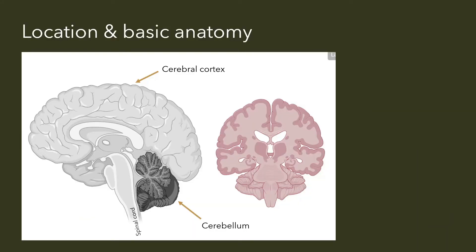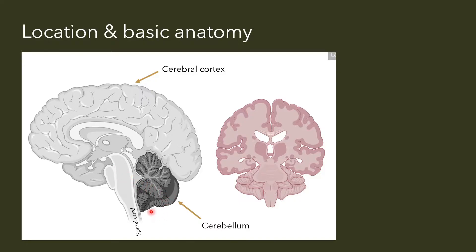The cerebellum in Latin means 'little brain' and it's actually located behind the brainstem, or dorsally of the brainstem. On this diagram the cerebellum is depicted in dark grey, just below the occipital lobe, while the cerebral cortex on top is in light grey. This section plane is described as the sagittal plane. On the right we have the coronal plane of the brain, where you can see the different folia of the cerebellum, or lobules.